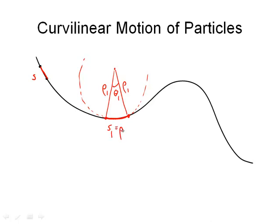S1 is equal to rho 1, the radius, times theta 1, the angle subtended by that. I can do the same thing over here — moving from here to there. You'll notice this is a much tighter curve, so it's going to have a smaller radius, rho 2, and some angle theta 2. And so S2, which is the distance along the curve, is equal to rho 2 times theta 2.